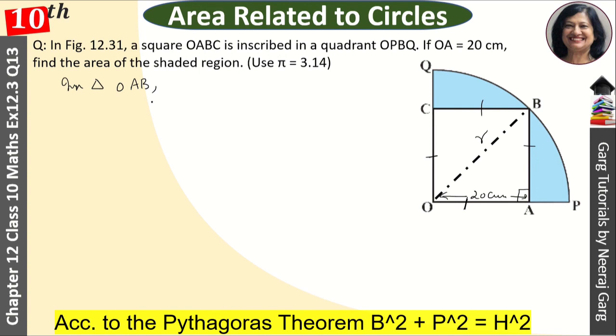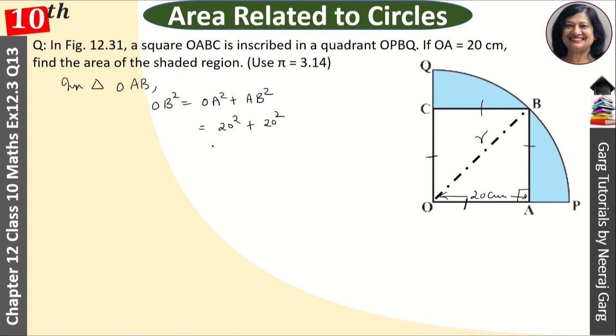So what happens? OB square is equal to OA square plus AB square. OA is 20 square plus 20 square, because all 4 sides are equal. So this is 400 plus 400. This is 800.